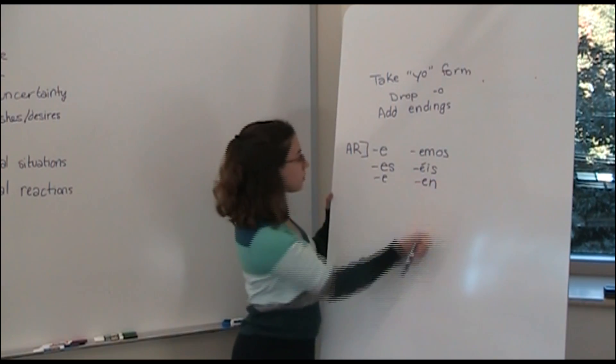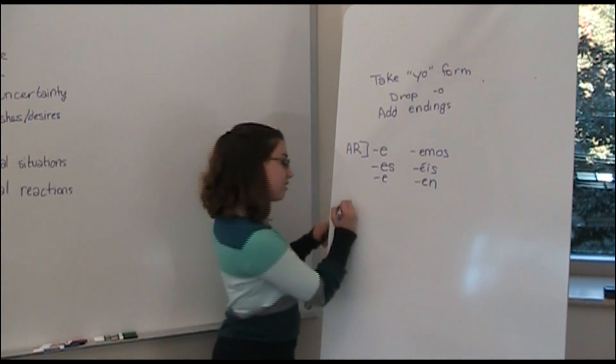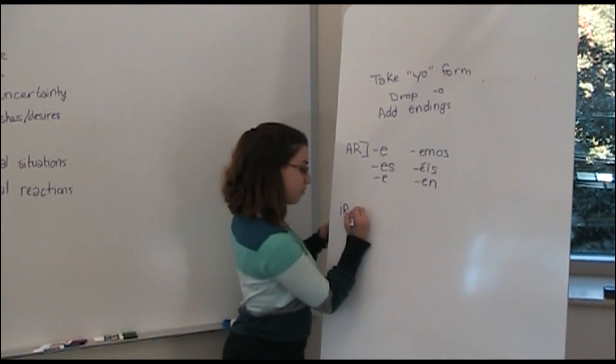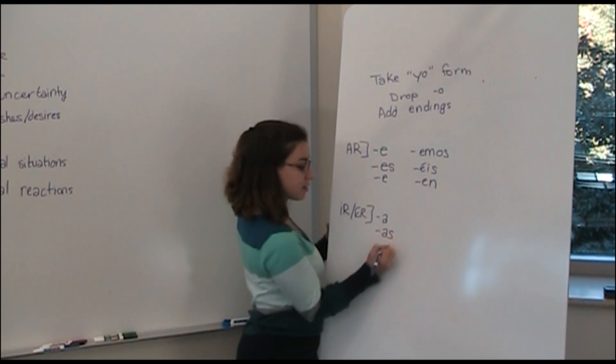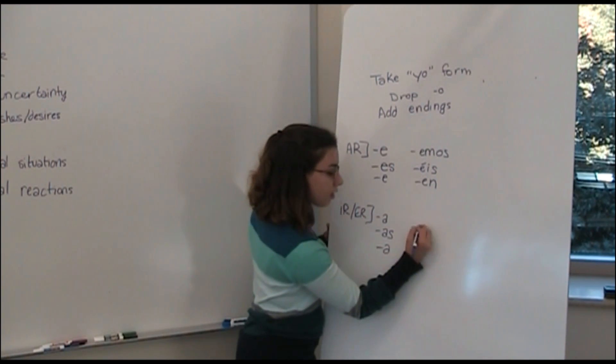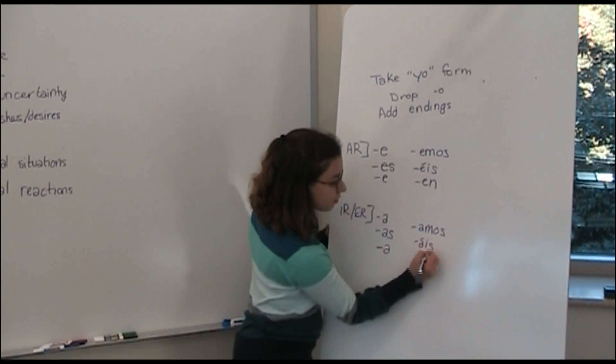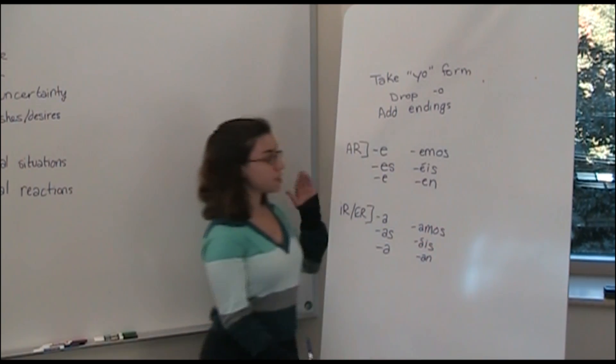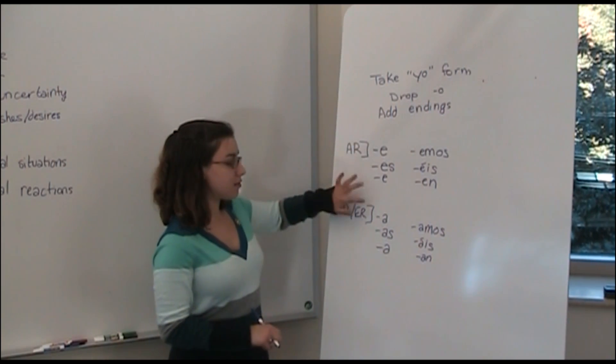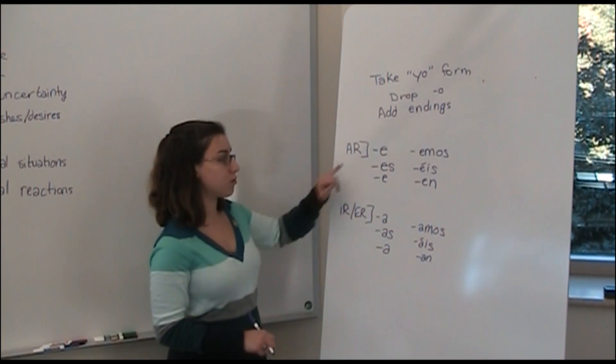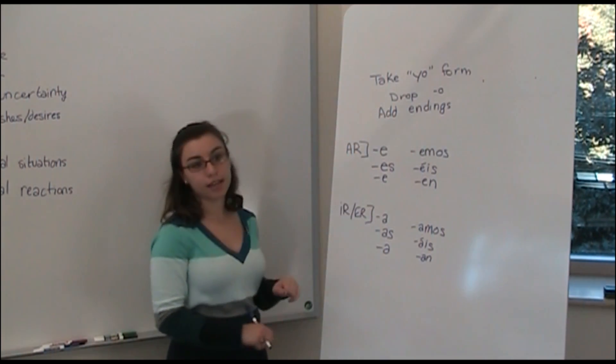And then for the -ir and -er verbs, it's the opposite ending. So we're going to have -a, -as, -a, -amos, -áis, and -an. So it's the same endings in the present, just kind of flip-flopped. And instead of having o for the yo form, we have e in the -ar and a in the -ir, -er.